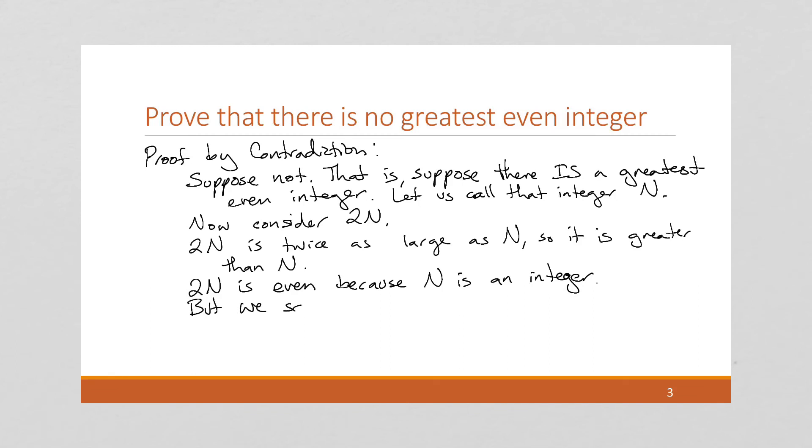But, we said that n was the greatest even integer. But, we found a bigger one. So, this is a contradiction. And again, you always want to note the contradiction.